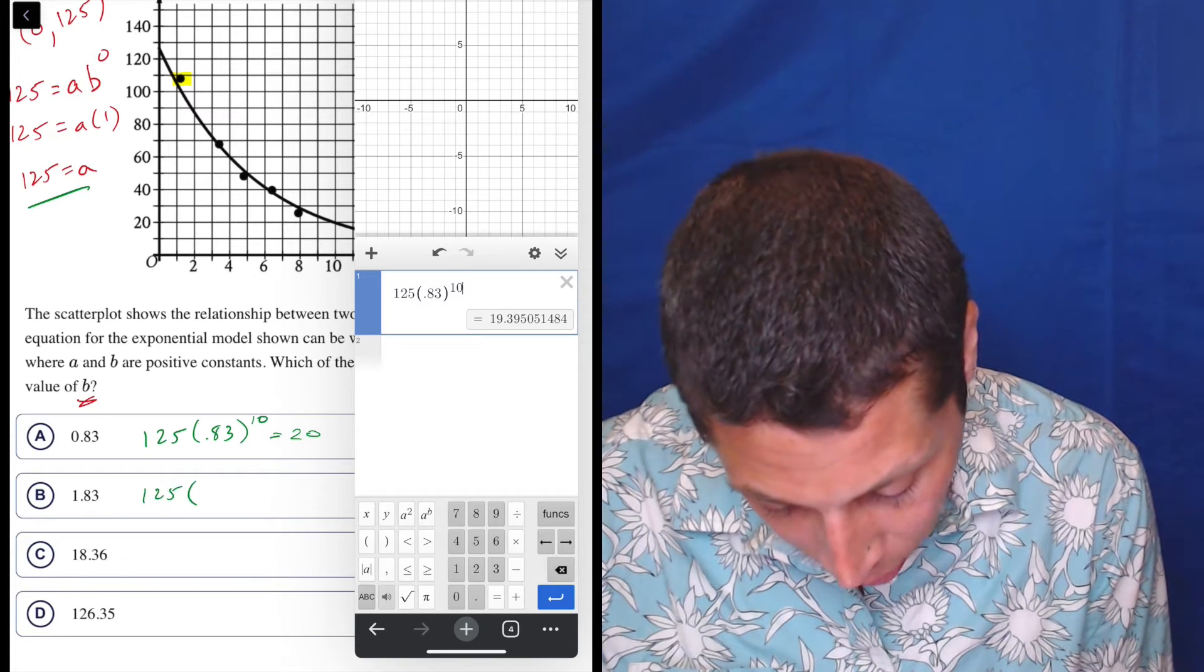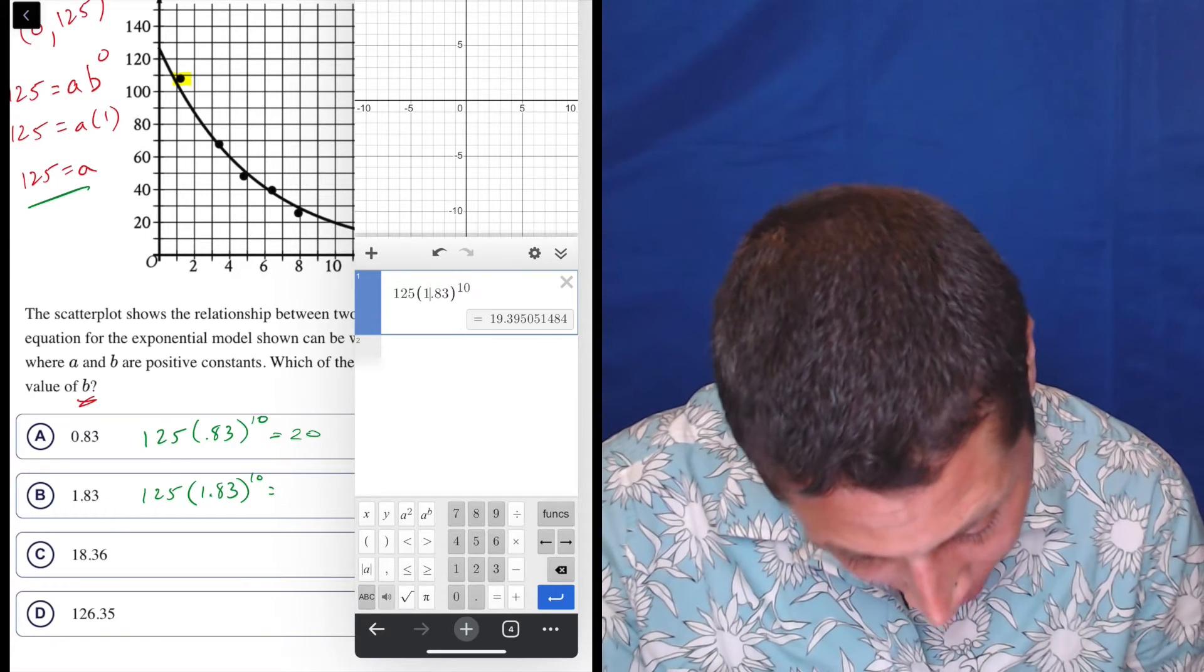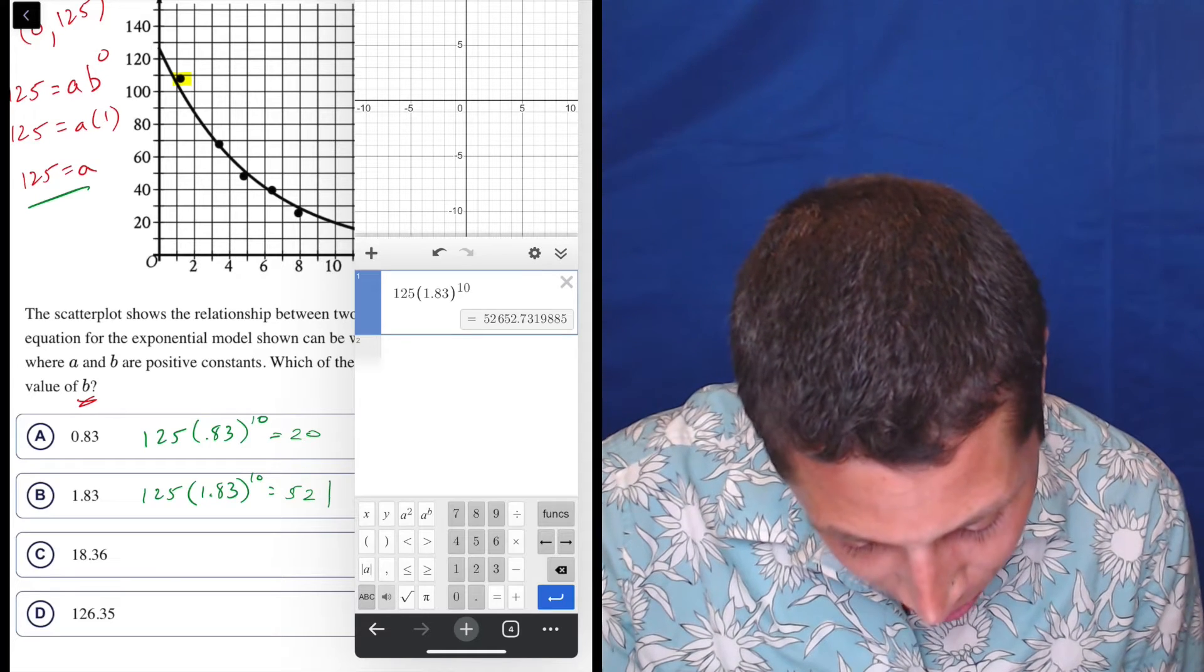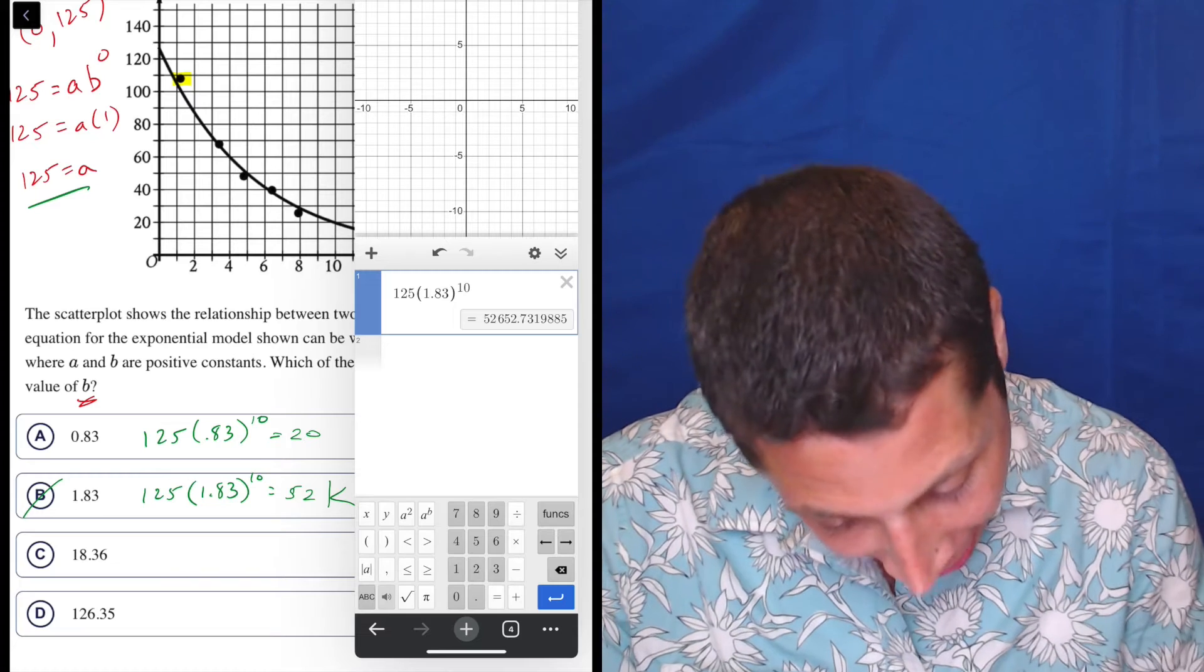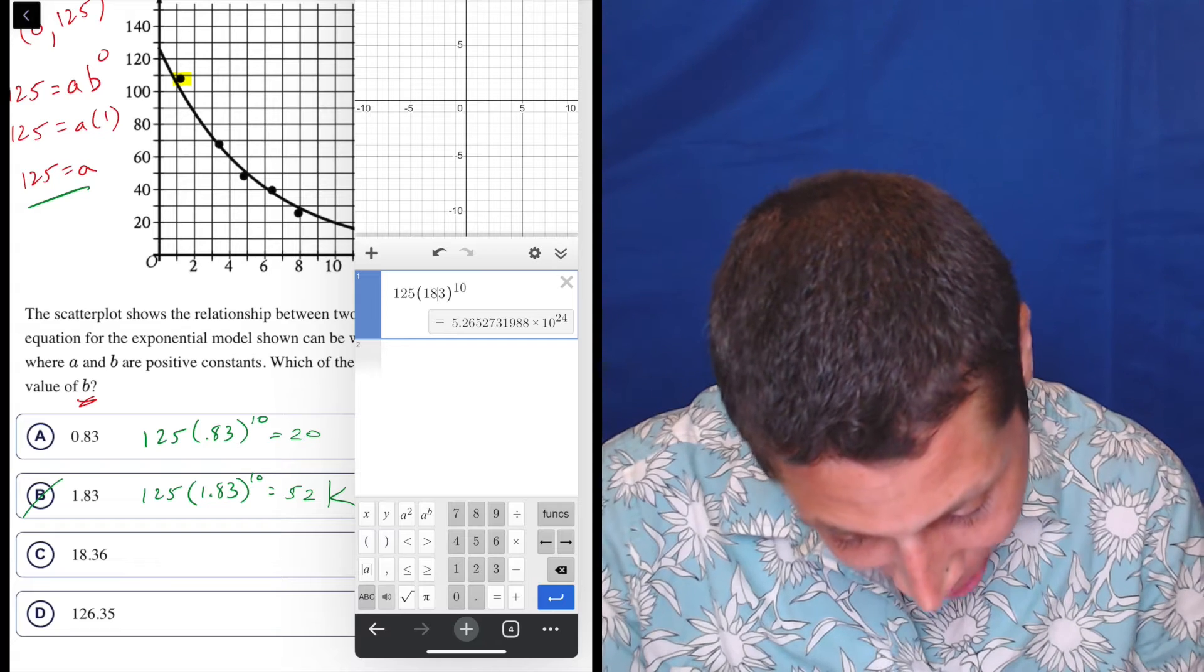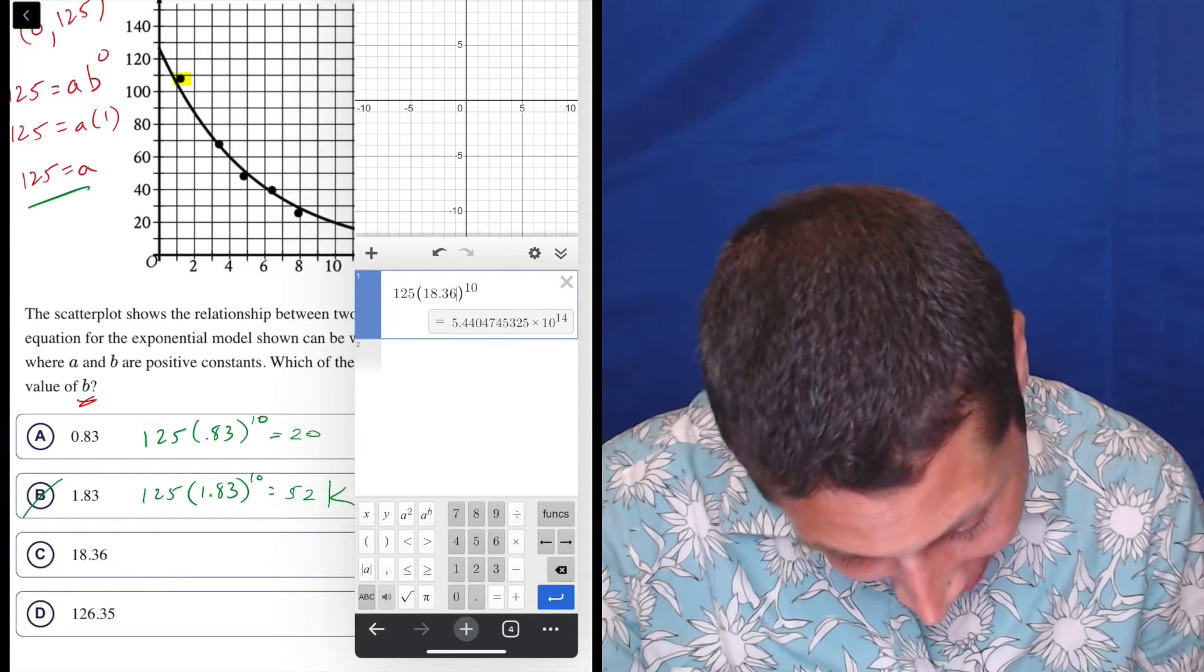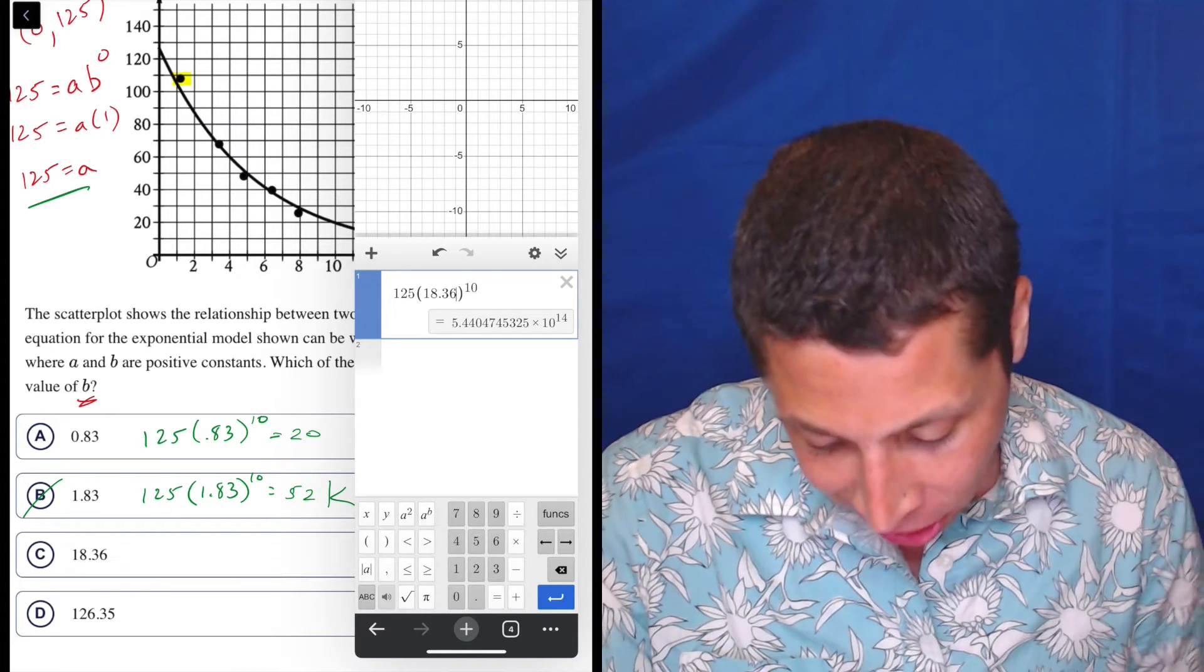So if I do 125 times 1.83 to the 10th, what do we get? Well, that changes it quite a bit. That's 52,000 something. So that's clearly off. And I have a feeling if we do 18. This is going to be a pain. I don't even know if the calculator is going to handle it. So if I do 18.36, you can see it's in scientific notation. That's how big this number is.